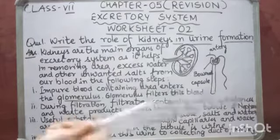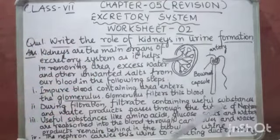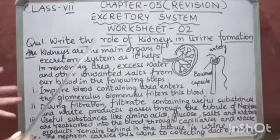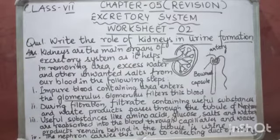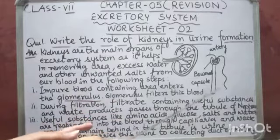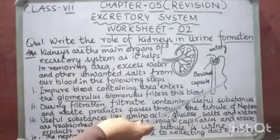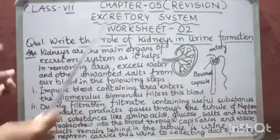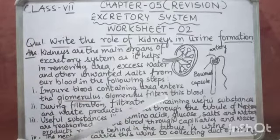Now, during filtration, the glomerulus filters the blood, and the filtrate containing useful substances and waste products passes through the tubule for reabsorption. Here the useful substances like glucose, amino acids, and useful salts are reabsorbed. And the waste products that remain behind in the tubule are carried to the kidney — and the waste product left behind is actually the urine.